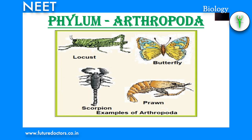Economic importance of insects: Apis (honey bee), Bombyx (silkworm) and Laccifer (lac insect) are economically important. Limulus (king crab) is a living fossil from phylum Arthropoda.